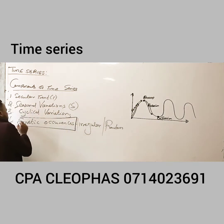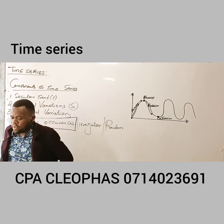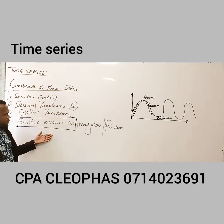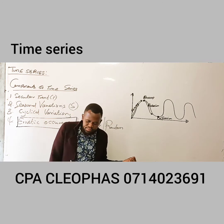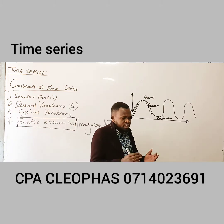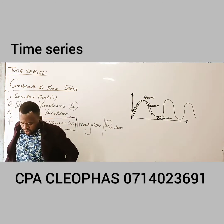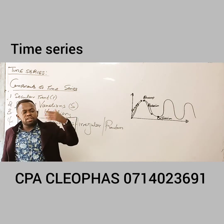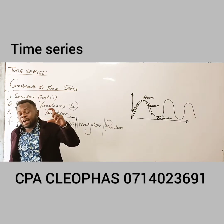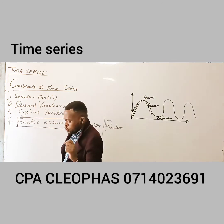The last component is erratic occurrences, also called irregular occurrences or random occurrences. These are the changes in time series which are normally unpredictable or uncontrollable.